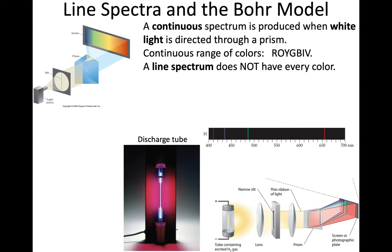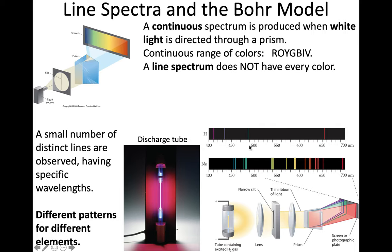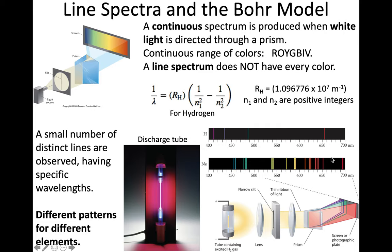The way that you could experimentally get this, put gas into what's called a discharge tube, send electricity through. When you then separate that light into its component colors, you don't see all the colors of the rainbow, you see instead distinct lines. This was the line spectrum here for hydrogen. Other line spectrum for other elements. What was this pattern? Why was it different for different elements? For hydrogen, it follows a very simple pattern, very simple mathematical relationship being shown here. The different n values in this case were simply integers, but they could explain the positions for the emission spectrum for hydrogen.